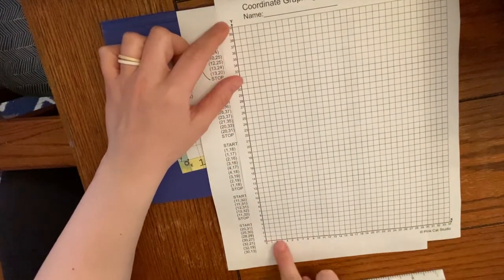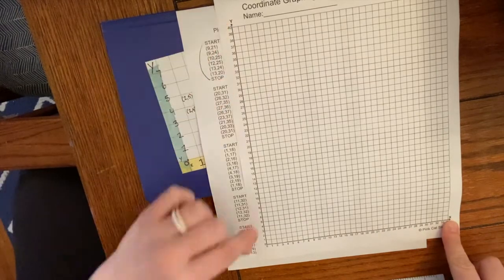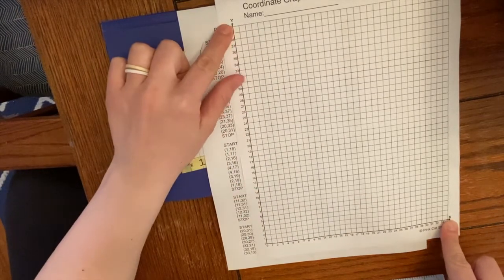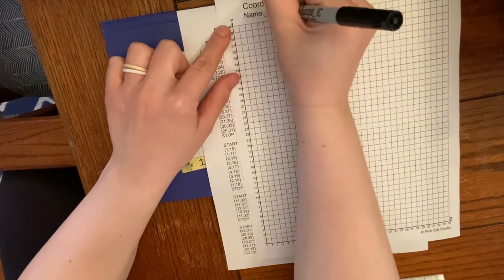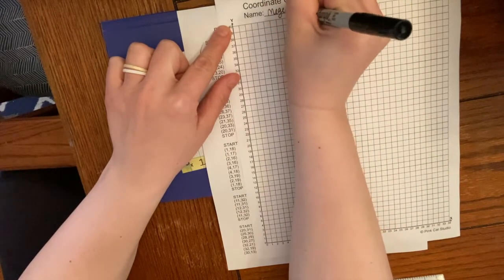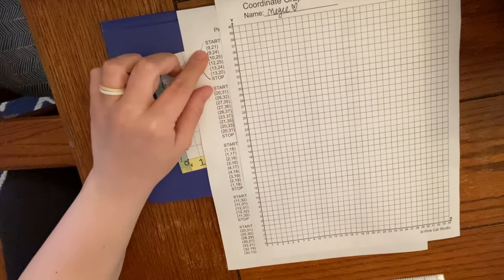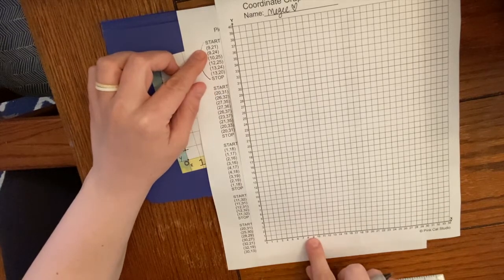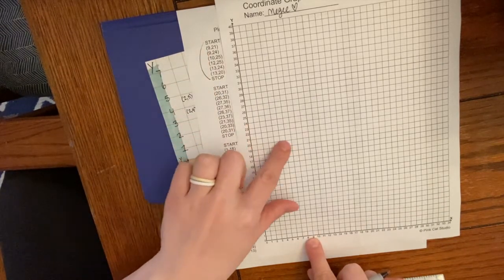It uses a much bigger graph than what we've been using. Like it goes to 40 and 34. You see, this is the x-axis and this is the y-axis. So I put my name and I go, okay, 9 on the x-axis and 21, which is here.